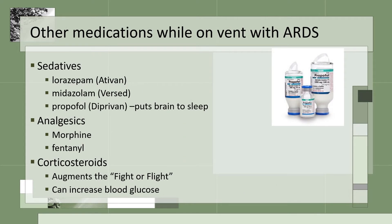Other medications for patients on the vent with ARDS include sedatives — lorazepam, midazolam or Versed, and propofol — and analgesics including morphine and fentanyl, and corticosteroids. The corticosteroids help augment the fight-or-flight response because the adrenal glands may not be working well. They can also increase blood glucose, so accu-checks will need to be done.